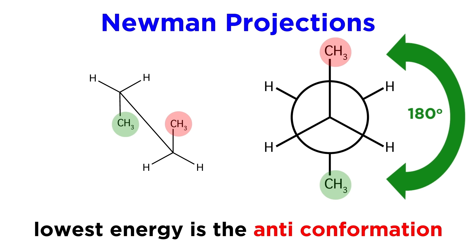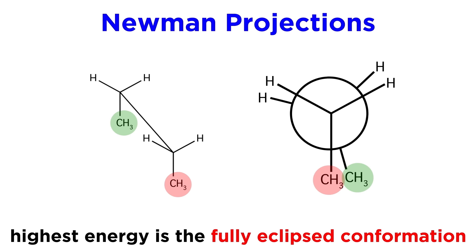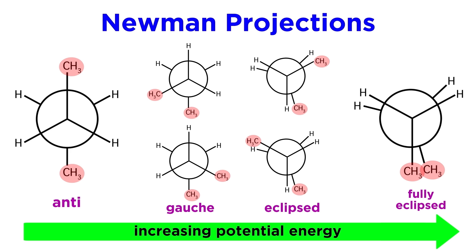but the lowest energy conformation of all will be this anti-conformation, whereby the two methyl groups are 180 degrees apart. The highest energy conformation will be this eclipsed conformation, where the methyls are right on top of each other. In between we have these other two eclipsed conformations,